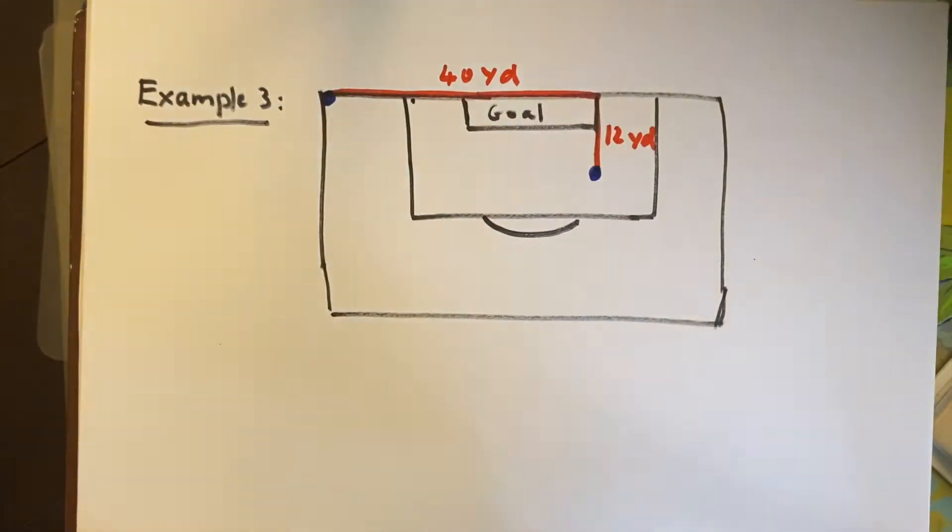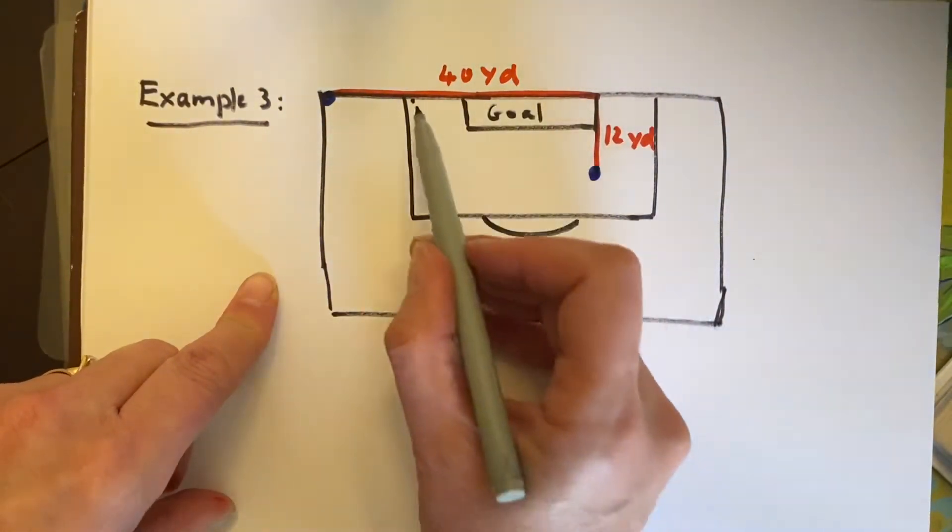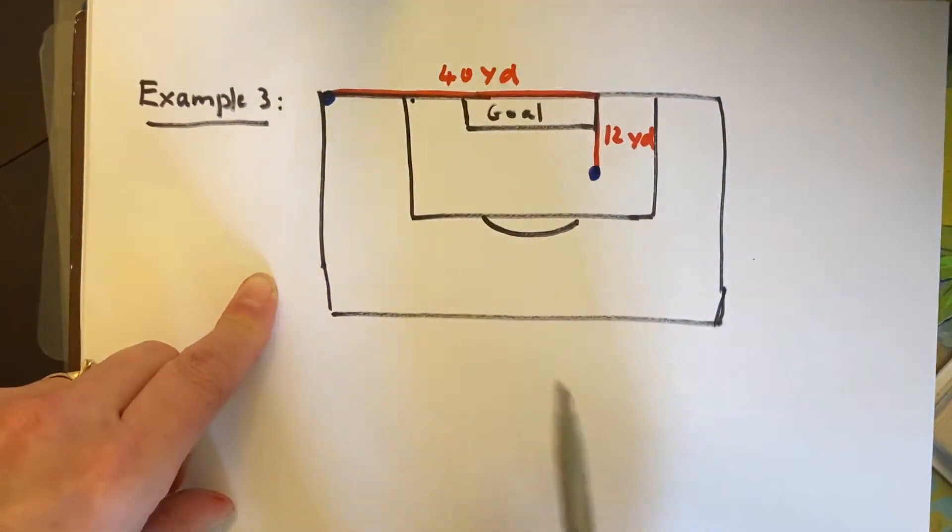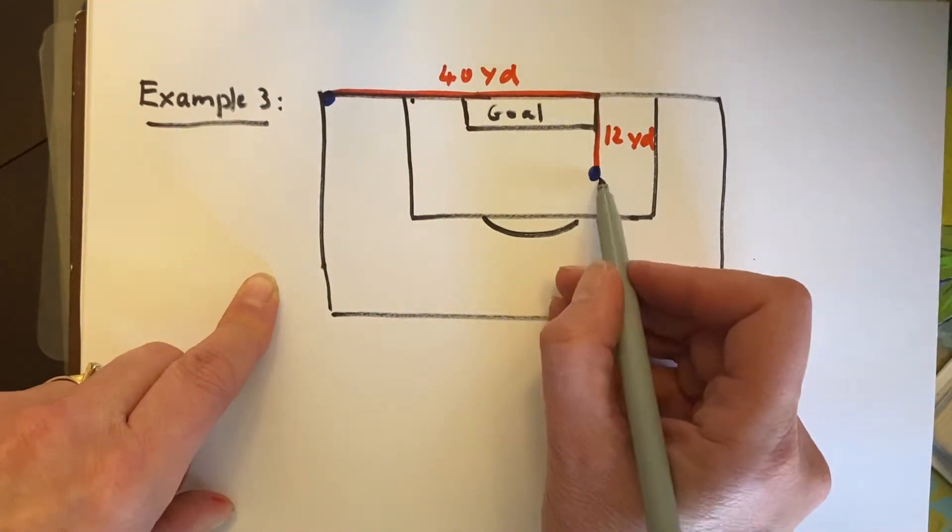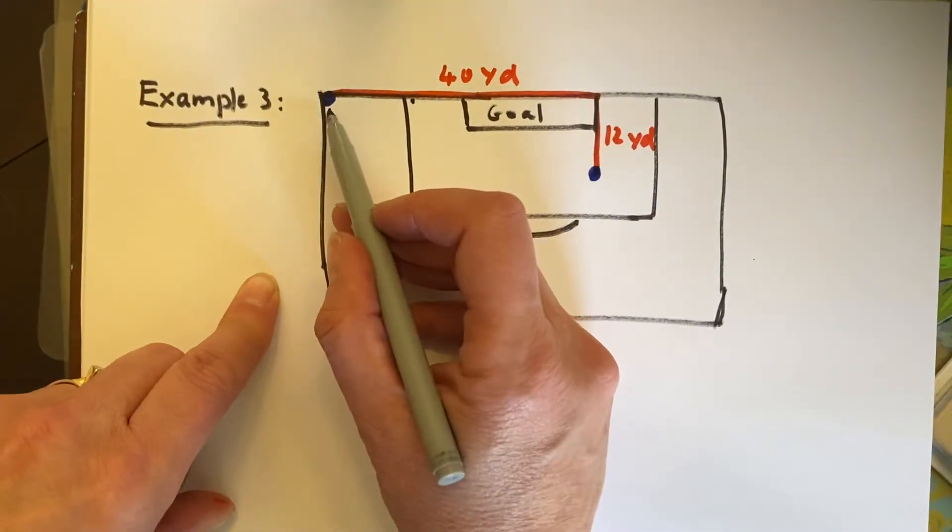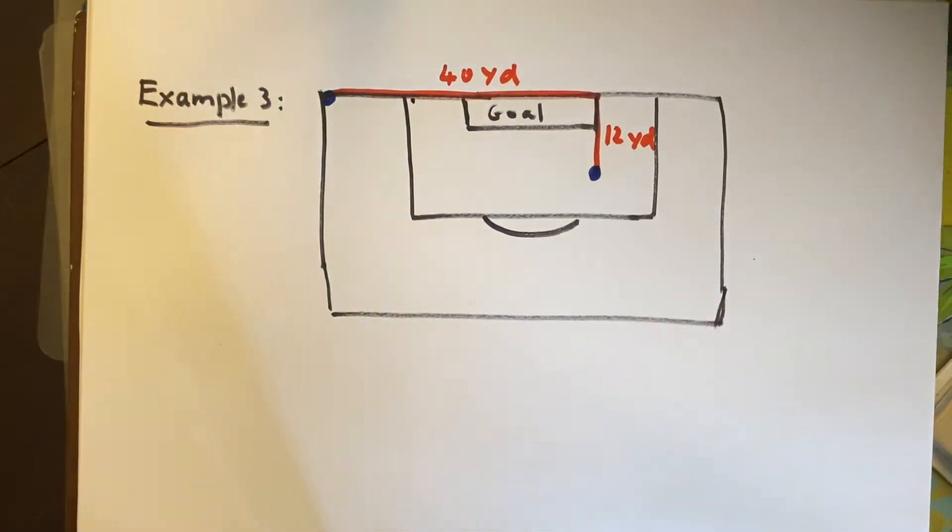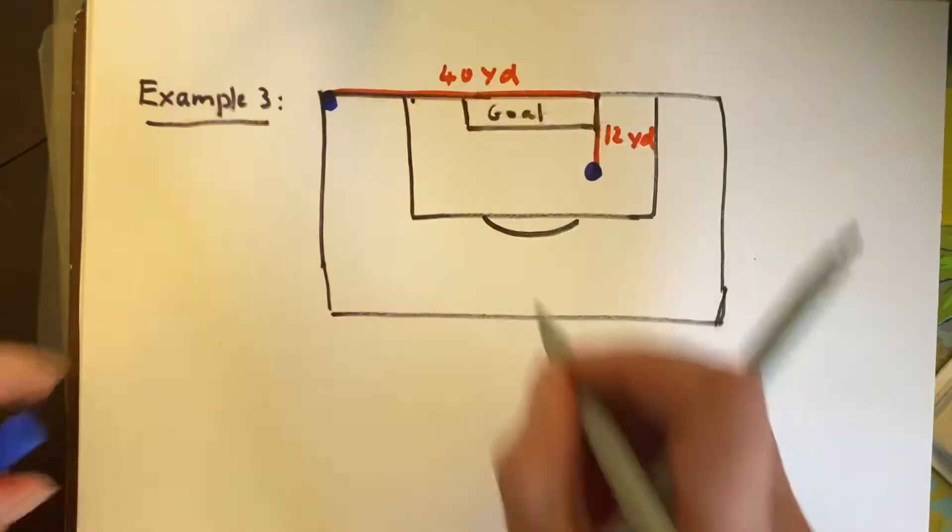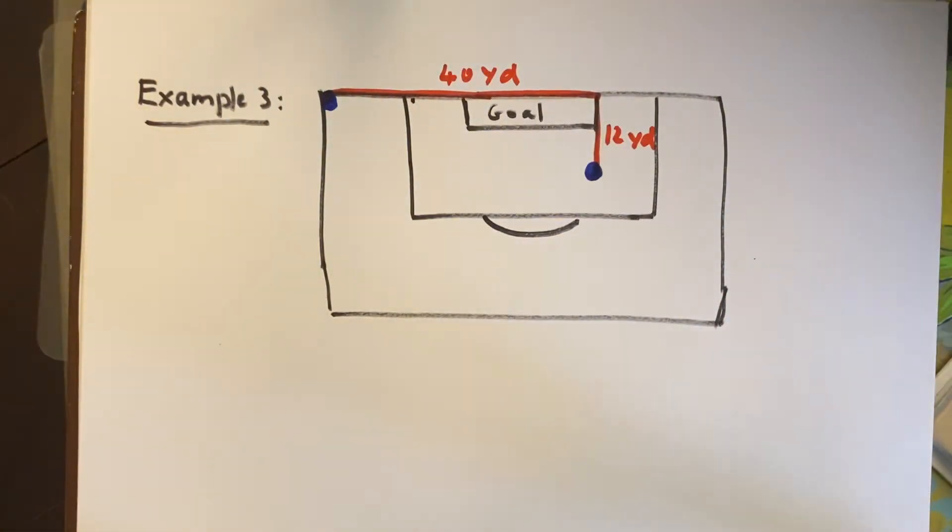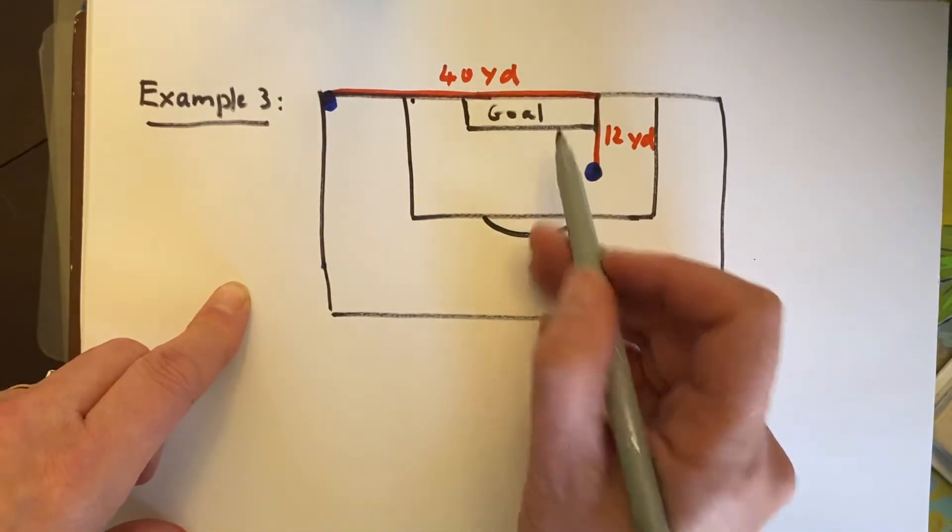So to explain what I just drew, I am drawing essentially a goal box and a soccer goal. And this blue line, this is a person giving a corner kick, trying to get it to this blue dot, which is another player over here. Essentially this person is doing a corner kick over here so that this player can kick it into the goal.